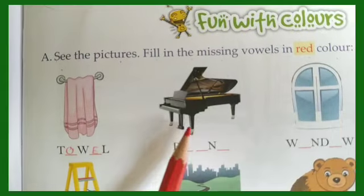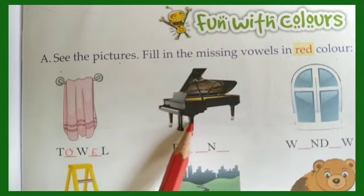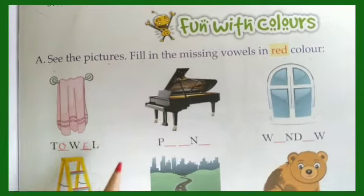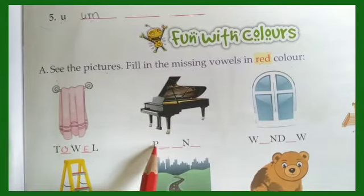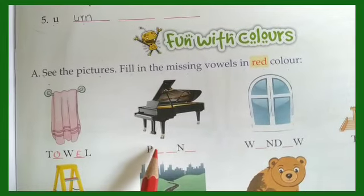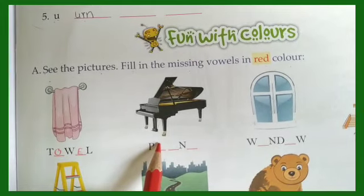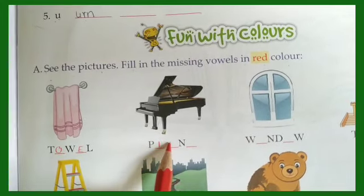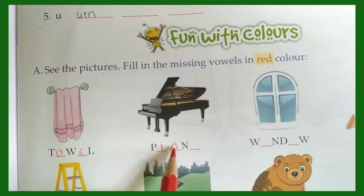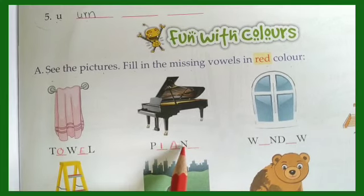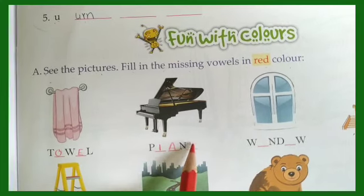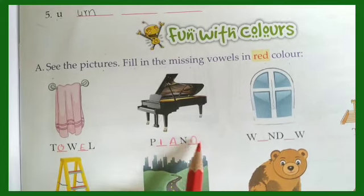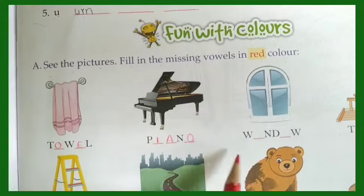Next is the picture of a piano. How do you spell? P-I-A-N-O. The vowels in piano are I, A, and O — so these are all vowels, isn't it children?